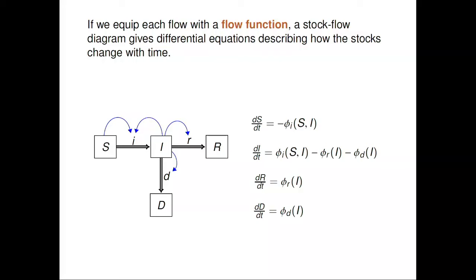Zero — it has no effect on the differential equations at all, because if I had a flow going from S to S, it would contribute a term with a minus sign because it's coming out of S, and the same term with a plus sign because it's also flowing back into S. So that's why we don't bother drawing those kind of double-edged arrows from something to itself, but you could if you want and we'd still know what to do.